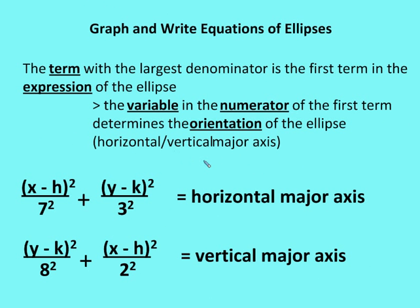To identify a horizontal major axis, look for the term whose denominator has the largest value. In the first example, that's 7 squared, and the variable in that term is x, which designates a horizontal major axis. In the second equation, 8 squared is greater than 2 squared, so 8 is the a value. Since 8 corresponds to the y variable, the major axis is vertical.